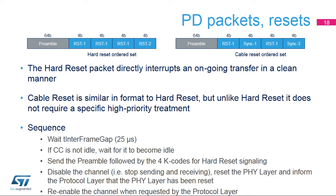The Type-C connector does not support a dedicated reset signal; consequently, reset conditions are signaled by using specific PD packets transferred over the CC line. These packets, called ordered sets, are completely handled by the physical layer. Two types of reset are defined: hard reset, which aborts ongoing transfers, and cable reset, which does not require high-priority treatment.